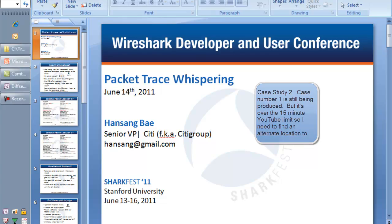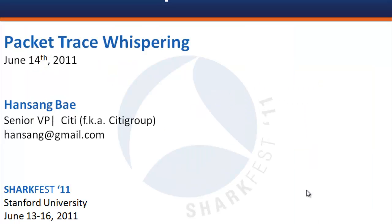Quick intro. My name's Han Sang Bae. I work for Citi, formerly known as Citi Group. I have a couple different roles at Citi — I own some of the network management tools: faults, alerting, capacity management. I also have a team that troubleshoot application and network issues. Over the course of the year, I cherry-pick interesting problems we see on the network and squirrel them away for a presentation at SharkFest.